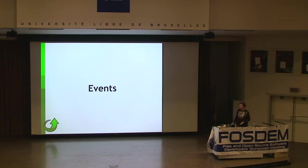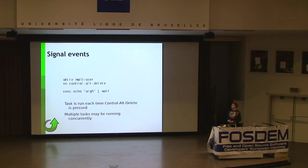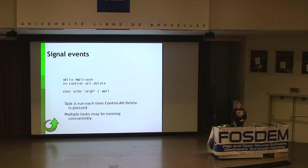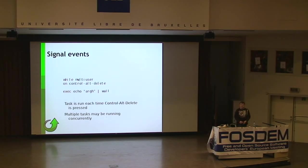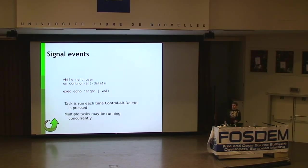Other things coming in Upstart 1.0 are changes in the way events work. Events have kind of grown from a simple string to having arguments and environments. You have signal events — these signal that something has occurred, and you don't have to remember it occurred afterwards; it's a transitory event. The typical example is the control-alt-delete key — the kernel sends a signal, and in the case of Upstart it emits this as an Upstart event allowing you to hook onto it. Every time you press control-alt-delete, you get a control-alt-delete event. You don't really care that control-alt-delete was pressed at some point in the past; you just want to do something when it's pressed.